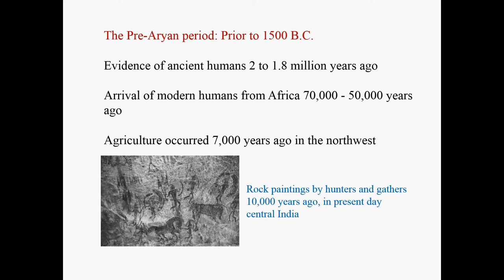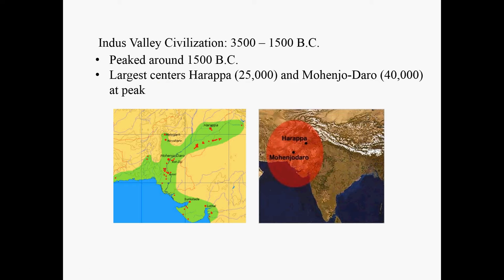These rock paintings were discovered in present-day central India. Agriculture occurred in South Asia around 7,000 years ago in the northwest, mainly in the Indus Valley area — what we call the Indus Valley civilization. This civilization lasted from 3500 to 1500 BC and peaked around 1500 BC. This map shows the variety of communities and cities in the Indus Valley area. The two largest communities are found in Harappa and Mohenjo-daro; at their peak, Harappa reached 25,000 people and Mohenjo-daro reached 40,000 people.